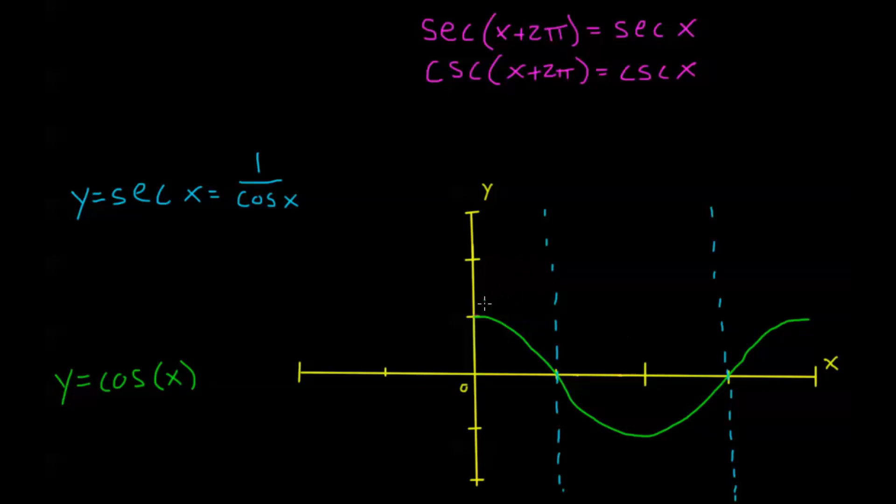Wherever cosine is 1, my secant is going to be 1 over 1, which is also 1. So at these two endpoints here. And as cosine gets closer to 0, secant explodes. Secant gets further away from 0.